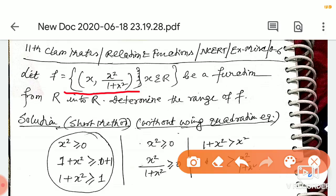Okay. That is a short method. This is a long method. So, what are the things that we know? x² > 0. 1 + x² will be greater than 0 + 1. So, 1 + x² ≥ 1.